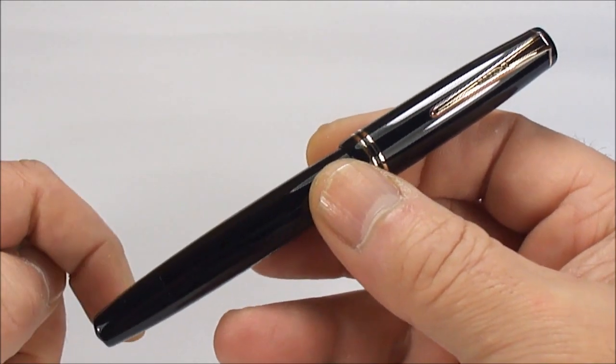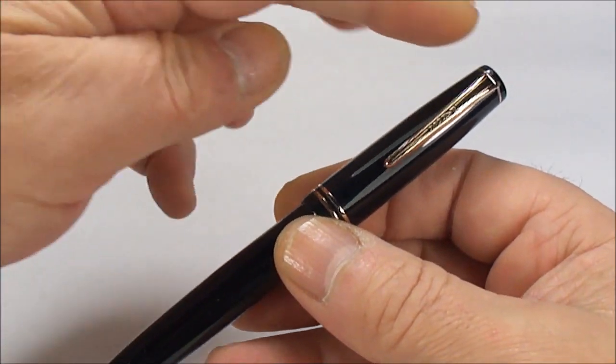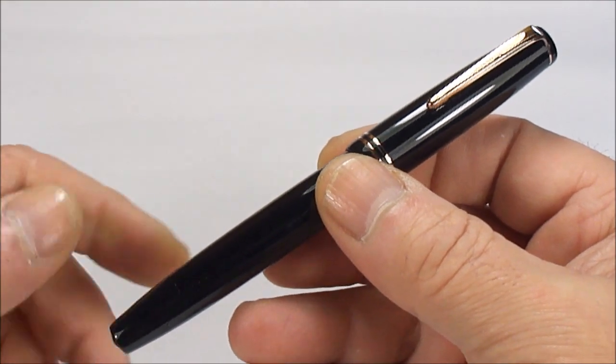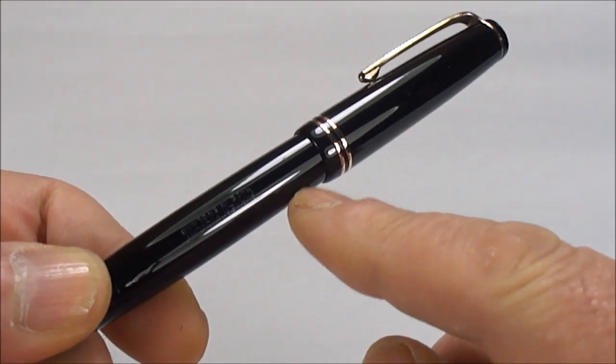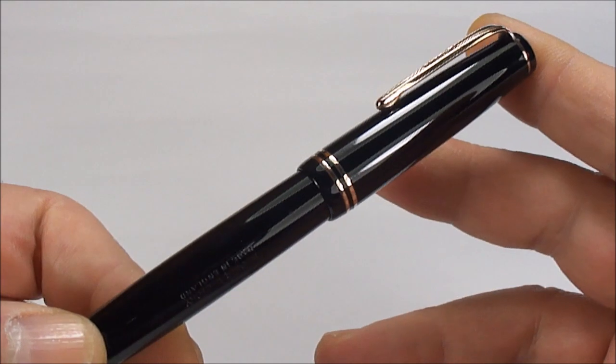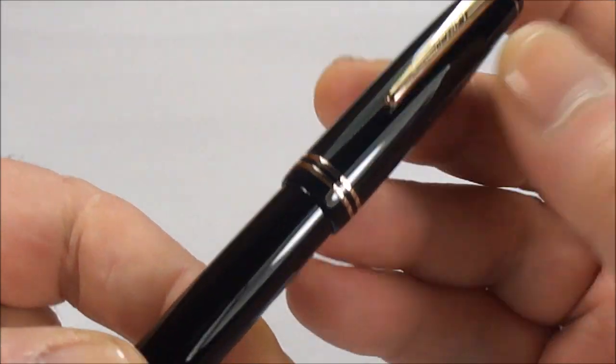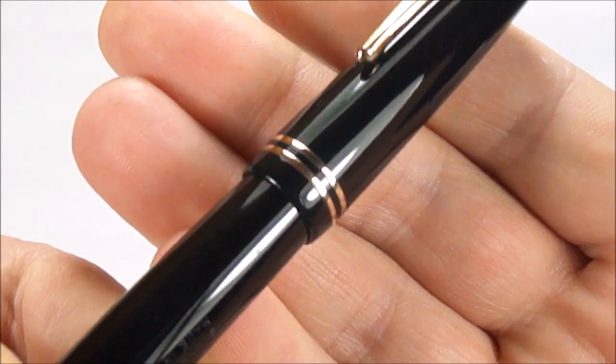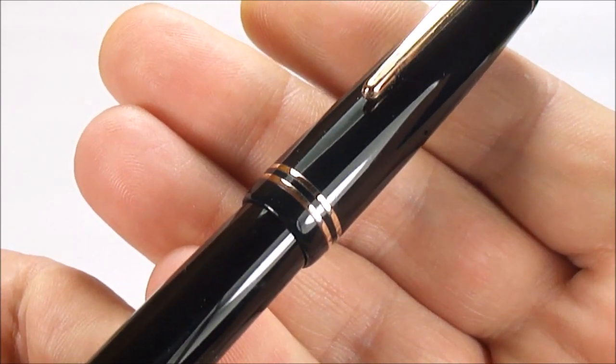Now, as I say, this is the Parker Victory Mark IV. The size of it, from the top of the cap to the bottom of the barrel, 131mm capped. Around the barrel, around about 12mm in diameter. If we show you the cap there, to the bottom, two lovely gold filled cap bands.